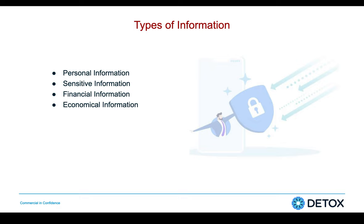Sensitive information in major cases is considered as credentials or banking or debit card information. No one really shares their credit or debit card information with an unknown person. If they make the mistake of sharing this sort of information, the possibility of them getting bankrupted is 100%. When we talk about financial information, there are so many people sitting behind computers for gaining or gathering someone's financial information so that they could craft an attack in later phases. The same goes with economical information.